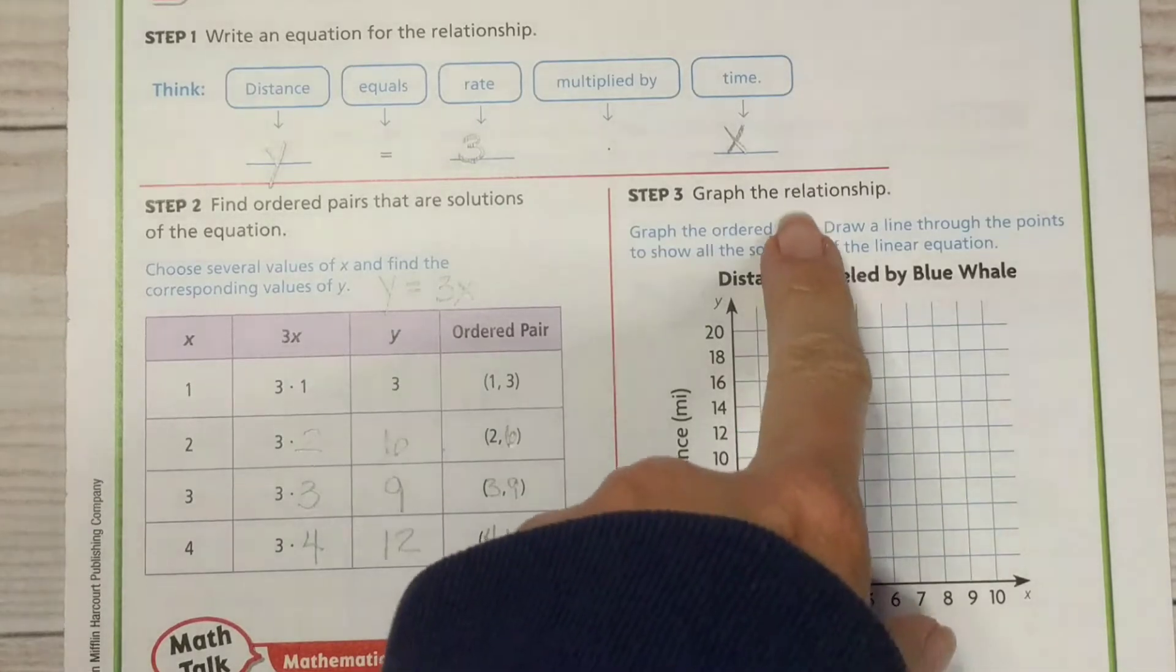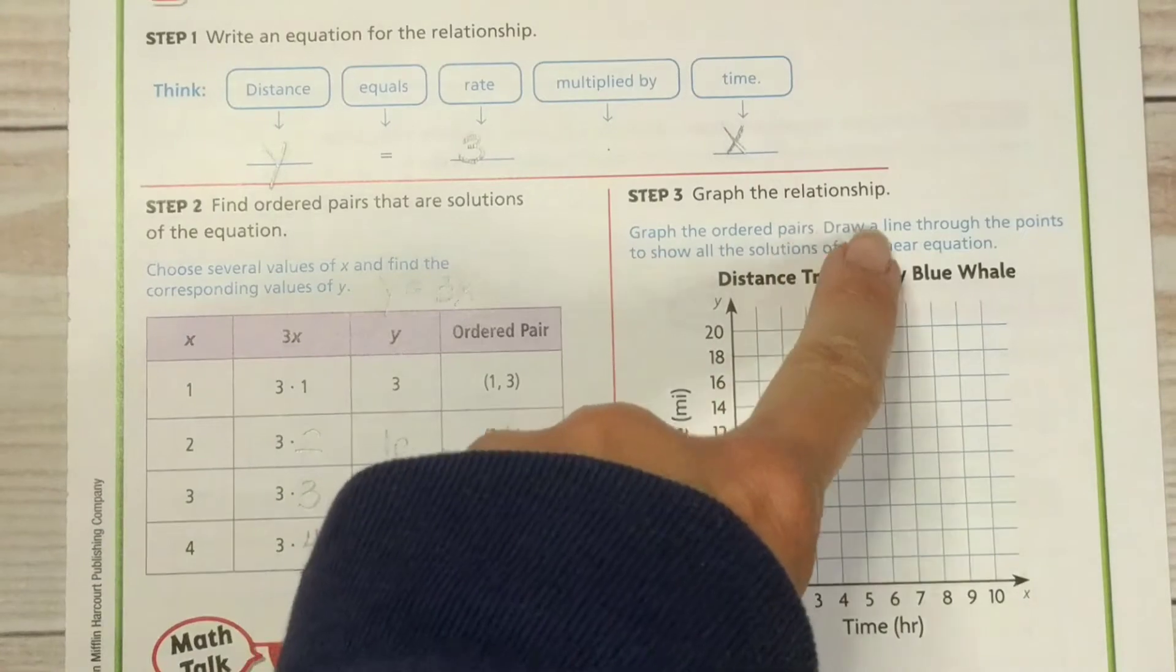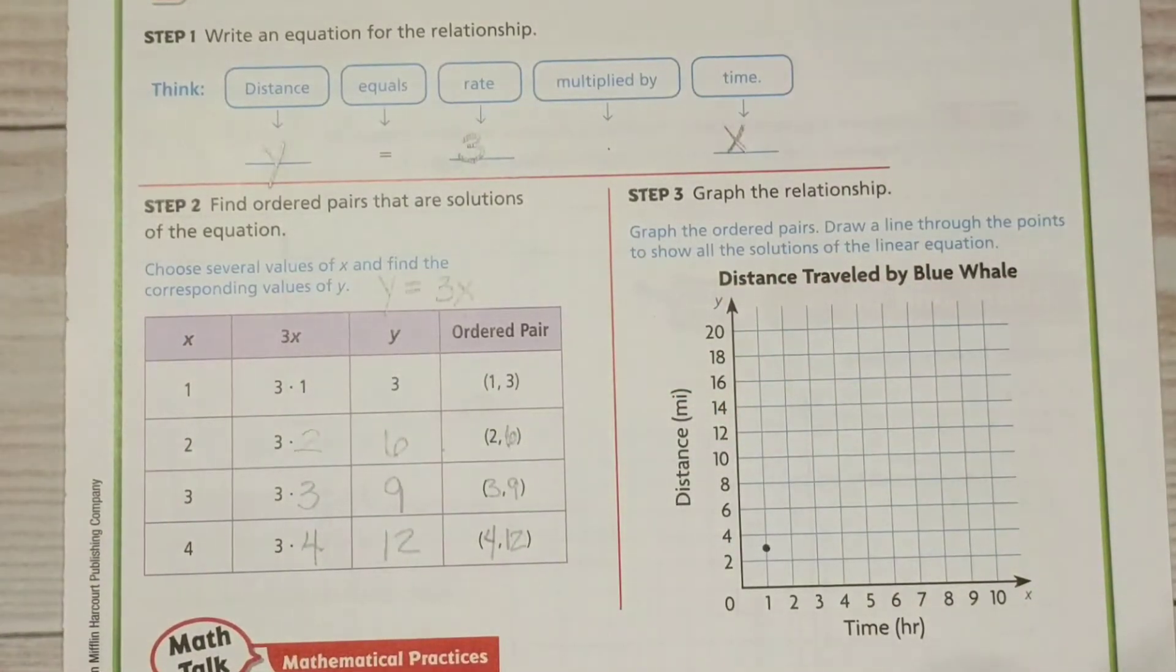All right. Now, step 3, we're going to graph the relationship. This is the fun part. Graph the ordered pairs. Draw a line through the points to show all the solutions of the linear equation.